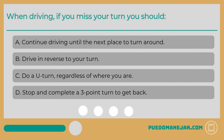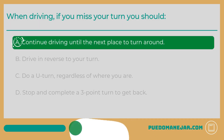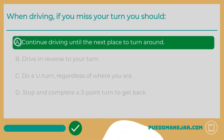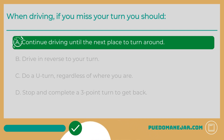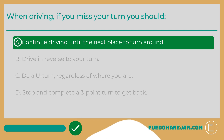When driving, if you miss your turn you should: A. Continue driving until the next place to turn around. B. Drive in reverse to your turn. C. Do a U-turn regardless of where you are. D. Stop and complete a three-point turn to get back. The answer is A — continue driving until the next place to turn around or reroute. Under no circumstances are you allowed to drive in reverse or against oncoming traffic, as doing so is extremely dangerous and highly illegal.